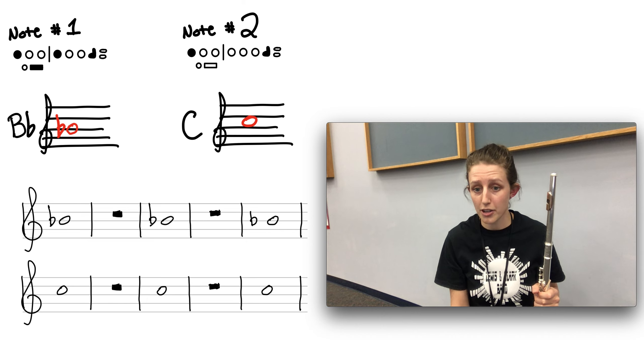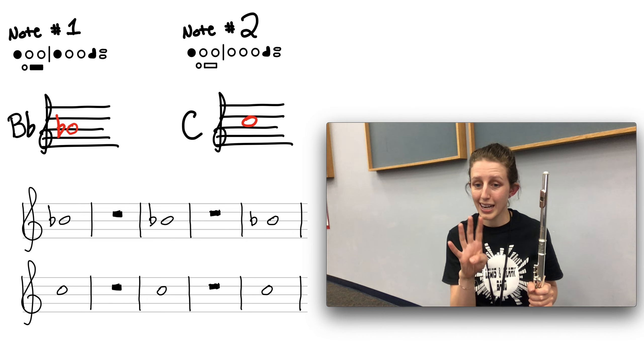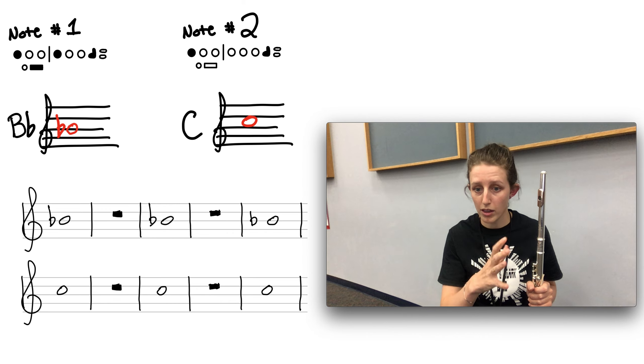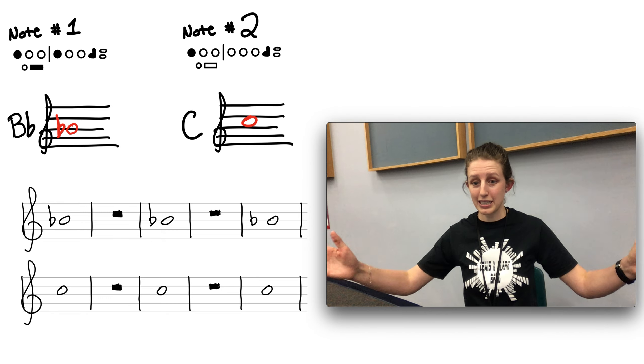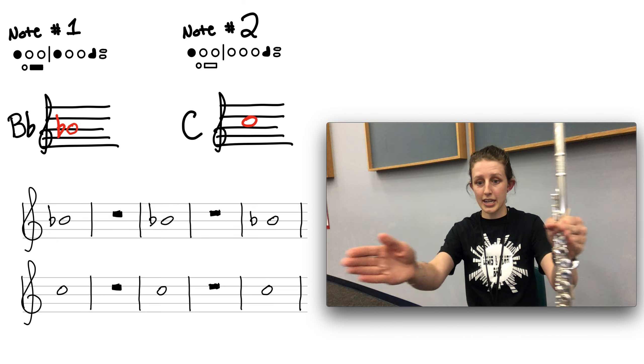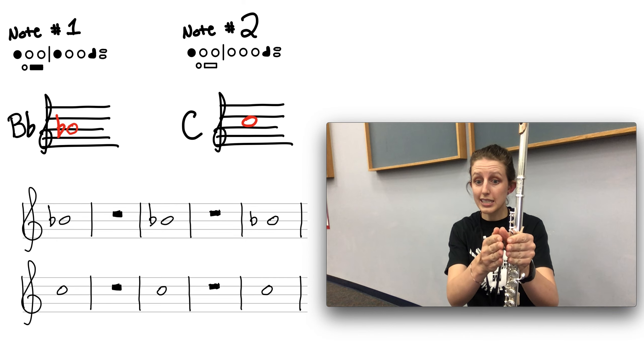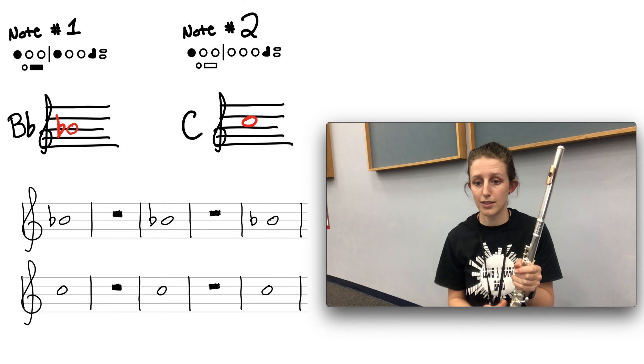Now flutes, you might realize that you're having some trouble holding a note for four whole counts. And if that happens, it's probably because we're letting all of our air out too early. If we think about letting all our air out as being like a sigh, we need to think about narrowing our air so that it's skinnier. It's more focused air so that we can make it last longer.